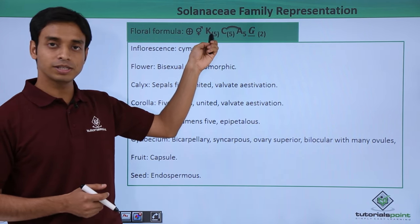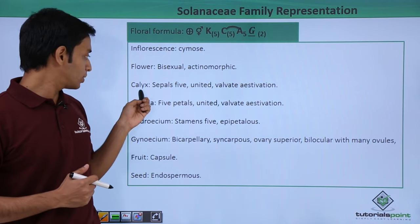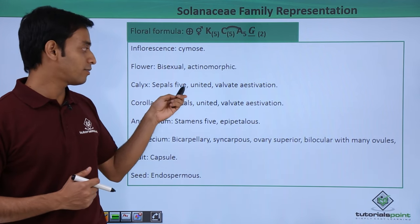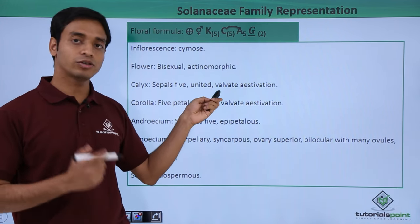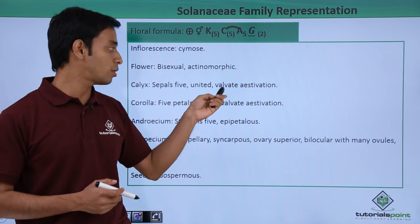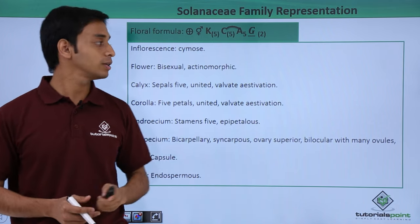There are five sepals which are in the united or fused form. So the calyx — there are five sepals in the united form, and they follow the valvate type of aestivation.